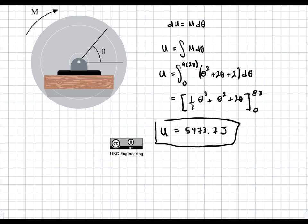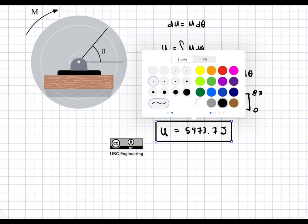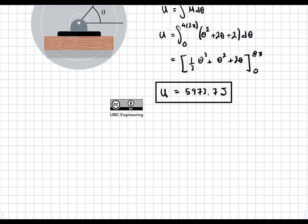You get that U equals 5,973.7 joules. This is our final answer for the work done by this couple moment.